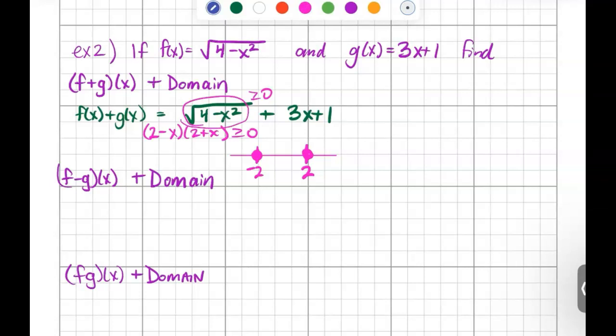And then we want to test the different intervals here and see which one works. So if I plug in something, say less than negative 2, like negative 10, I would get 4 minus 100 on the inside, which is going to clearly make a negative, so that doesn't work. If I plug in 0 between negative 2 and 2, I get 4 minus 0, square root of 4 works, so that means it is shaded between.